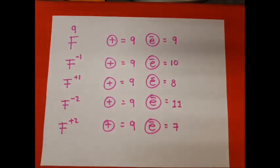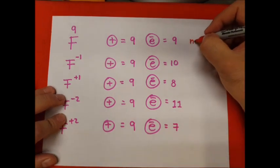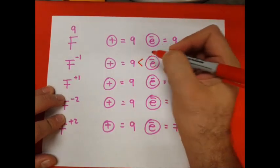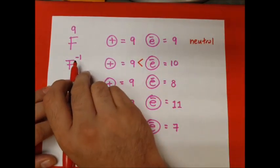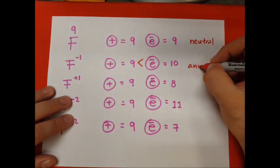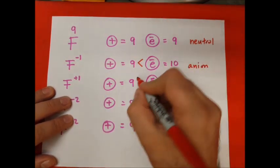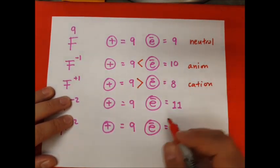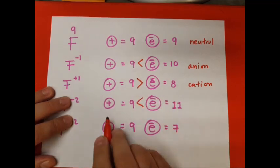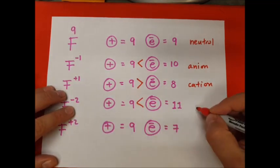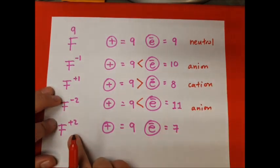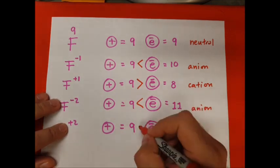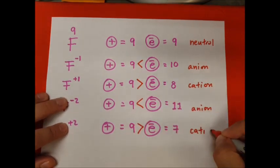When we classify these atoms: the first is a neutral atom because the number of protons is the same as the number of electrons. The second has more electrons, so it's negative — it's an anion. The third has more protons, so it's a cation, which is a positive charge. The fourth is more negative by 2 — also an anion. And the last, positive 2 with 9 protons and only 7 electrons, is also a cation because the number of protons is greater.